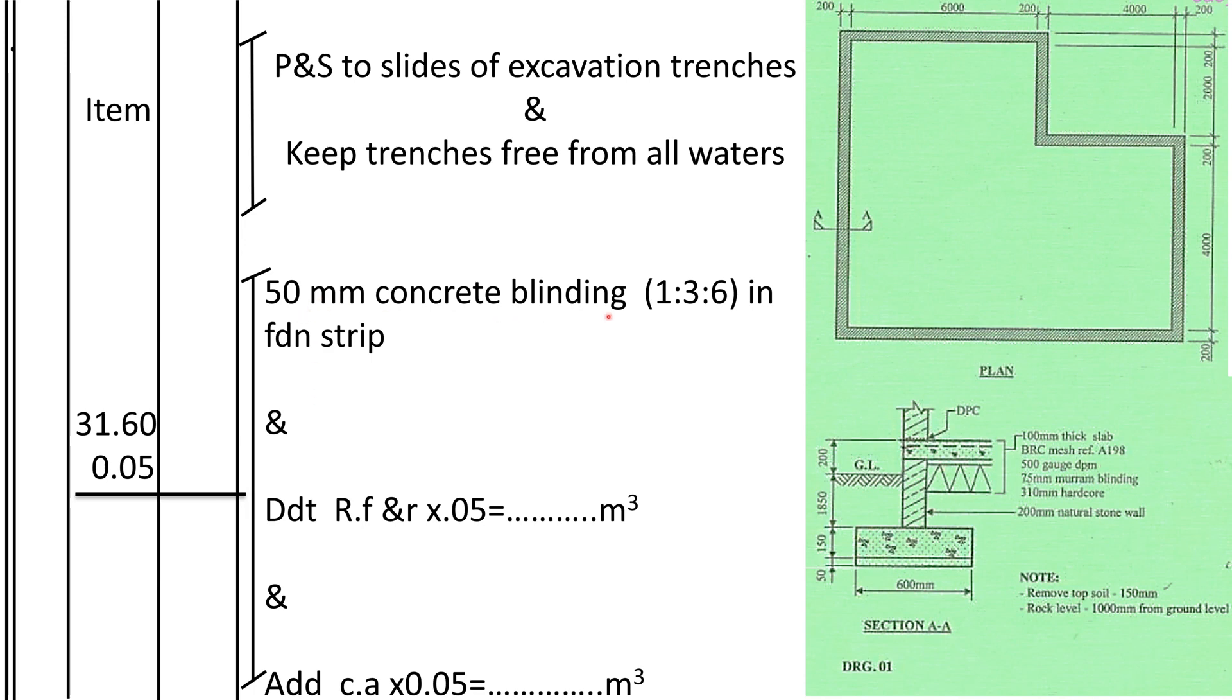Then we shall say 50 millimeters blending. The thickness of the blending we shall write it in the description column: 50 millimeters concrete blending, 1:3:6 in foundation strip. Then this concrete has replaced the soil, so what do we do to the soil that was in the heap? We shall deduct it.